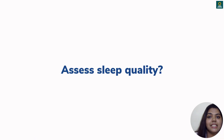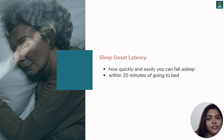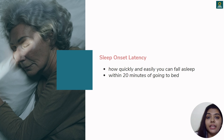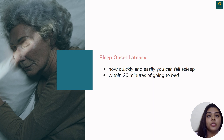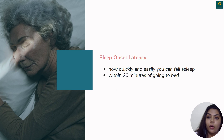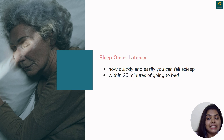How can we assess sleep quality? The first measure is sleep onset latency, which means how quickly and easily you can fall asleep when you are in bed. If it is taking more than 20 to 30 minutes after you go to bed to fall asleep, that is okay. But if you are in bed for more than one or two hours, your sleep onset is not proper and that affects your quality of sleep.